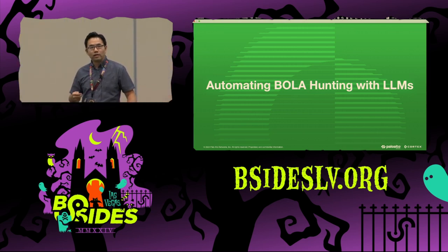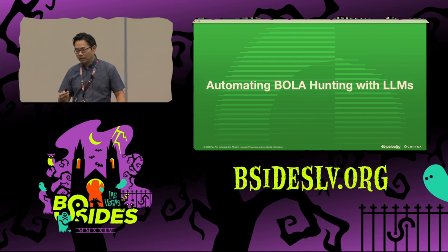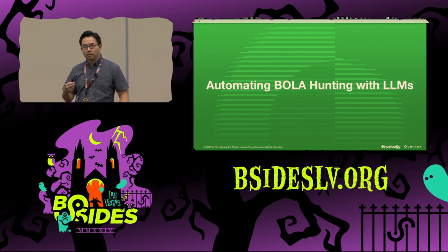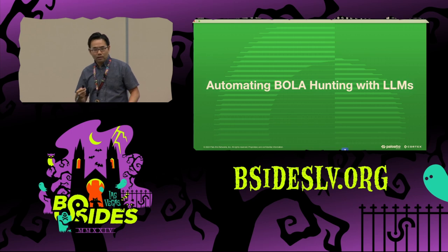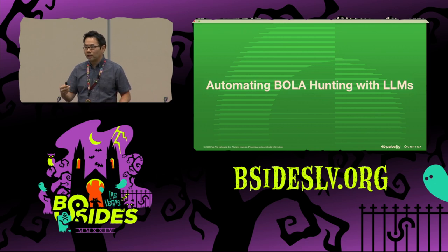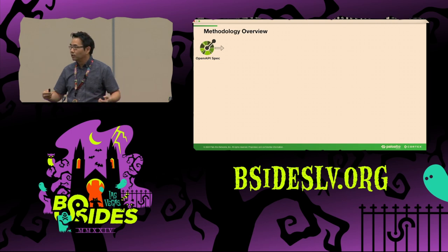BOLA is not a new problem — it has been around ever since we had the internet. However, it was only two years ago that we realized AI might give this problem a gleam of hope. The rapid advancement of AI provides new tools to solve previously unsolvable problems. In particular, our challenge of extracting context and logic information from textual data is what large language models are extremely good at. That's the beginning of our journey using AI to solve this problem.